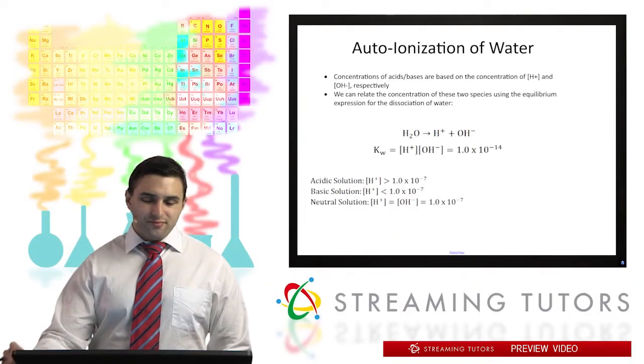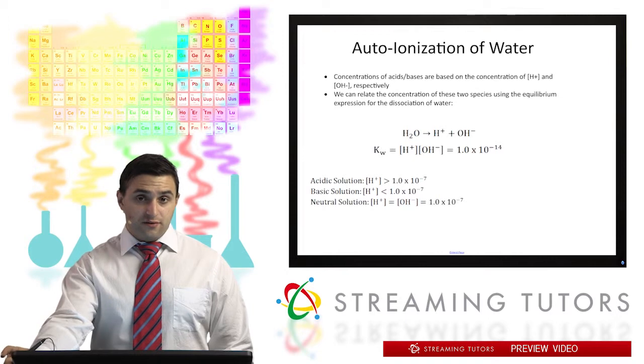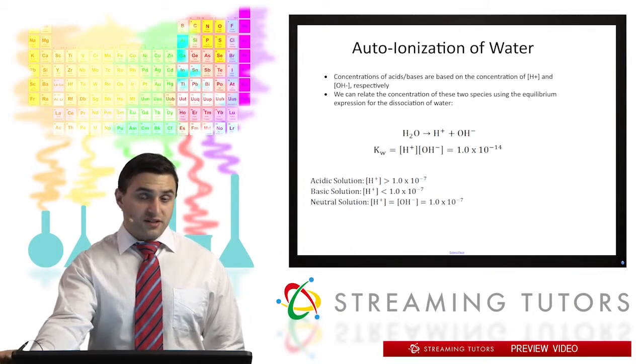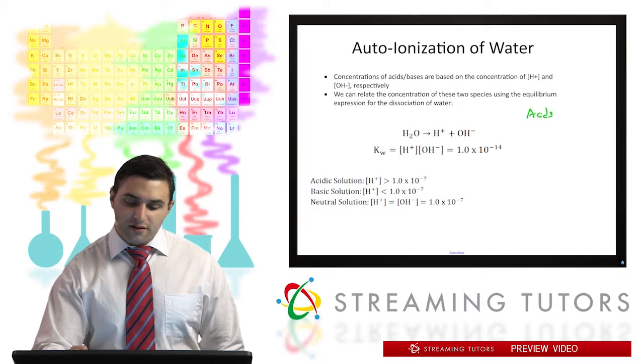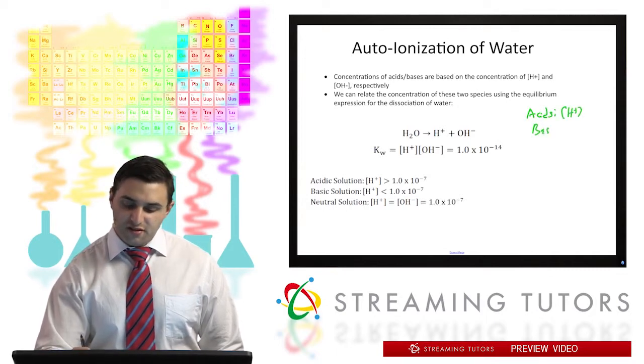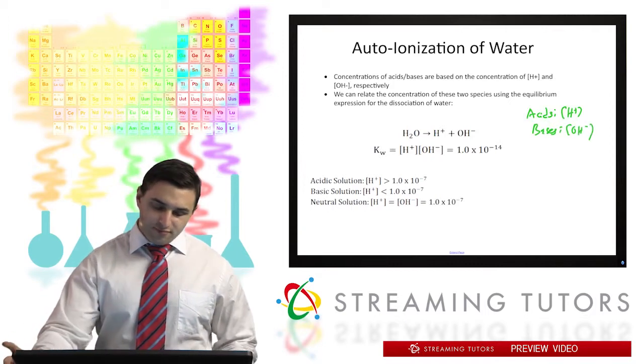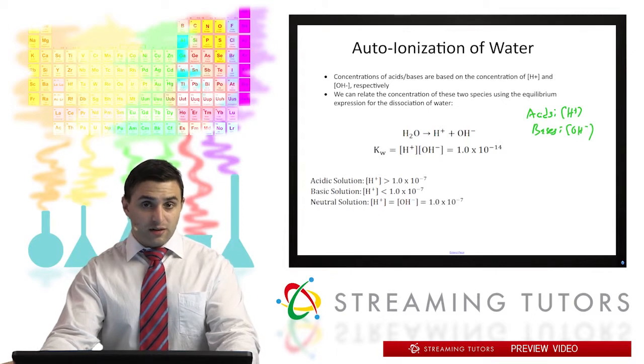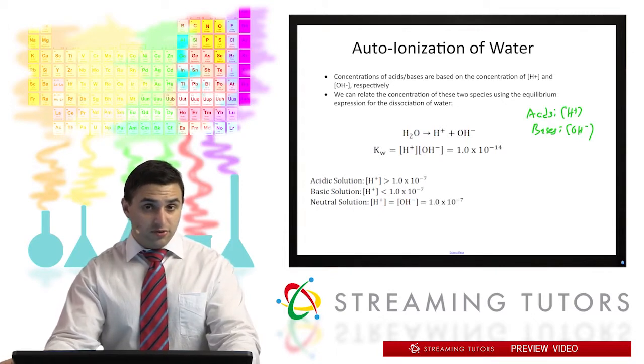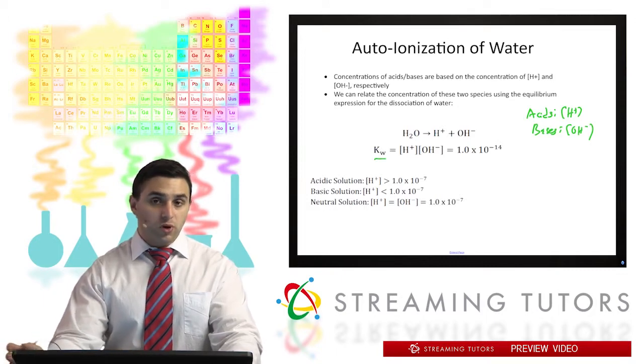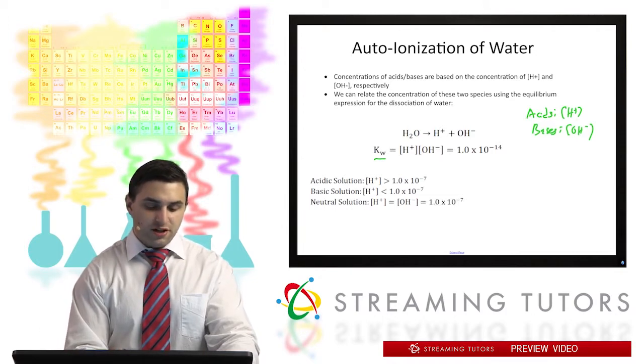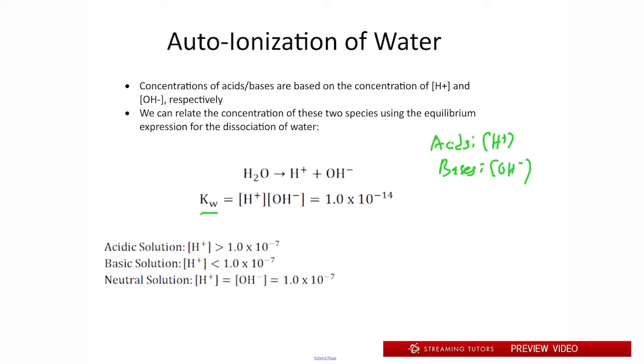For now, let's talk about looking at the concentrations of H+ and OH- in water. These are the things that are going to determine whether a solution is acidic or basic. We measure acids by their H+ concentration, and we generally measure bases by their OH- concentration. The way we can relate those two terms is through looking at the autoionization of water, basically just breaking up water into H+ and OH-. The equilibrium constant for this, known as KW, is equal to 1 times 10 to the negative 14. So the product of H+ and OH- is going to equal 1 times 10 to the negative 14. You can use this relationship to interchangeably convert between H+ concentration and OH- concentration.